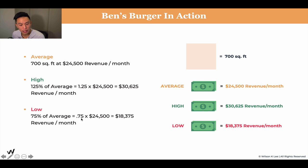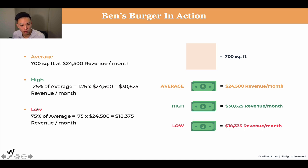To calculate the low side, we take 0.75 times the average, which gives us $18,375. If you want to adjust the variance — say 15% — then the multipliers would be 1.15 and 0.85. Whatever percentage you want as variance, just apply it as a multiple to calculate your low and high scenarios. So these are the three scenarios: on the high side you make around $30,000, on the average side around $25,000, and on the low side around $18,000 per month.